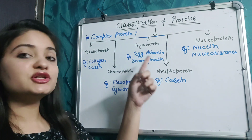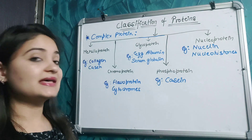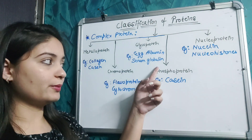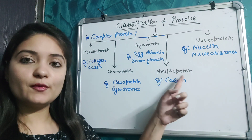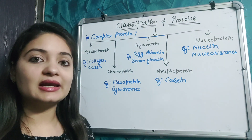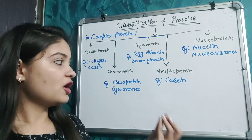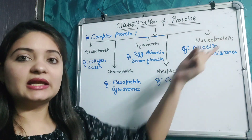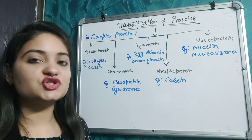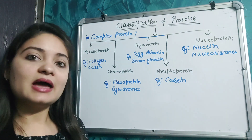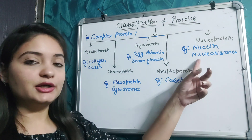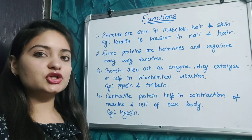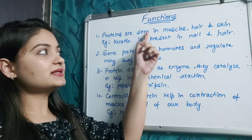Glycoproteins are proteins linked to a carbohydrate as the prosthetic group, for example egg albumin and serum globulin. Phosphoproteins are proteins linked to phosphoric acid, for example casein. Nucleoproteins are proteins linked to nucleic acid and protein, for example nucleon and nucleohistone.